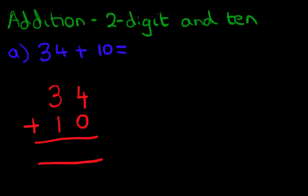We can label the columns. The column on the right-hand side is the units column and the one next to it is the tens column. Now when we are adding using the vertical format, we add each column in turn. And we always start with the column on the right-hand side first, the units column.